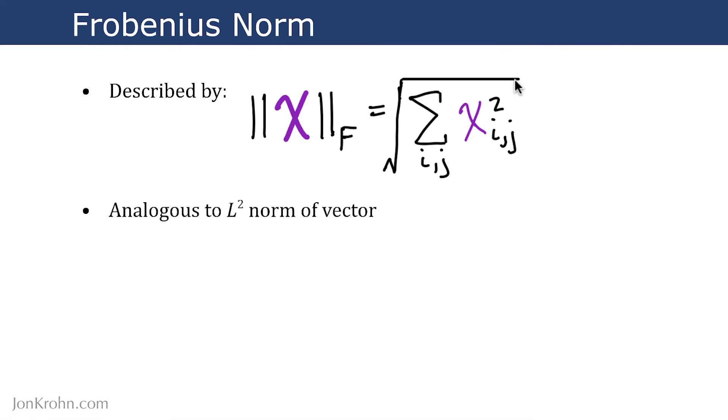This Frobenius Norm is analogous to the L2 Norm of a vector. Again, check out that norms and unit vectors video from earlier for a refresher. So like the L2 Norm, the Frobenius Norm measures the size of a matrix in terms of Euclidean distance. So that's just normal, plain old distance, like we would use to measure the dimensions of a room or how far you threw a ball.